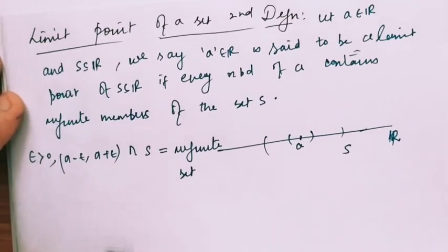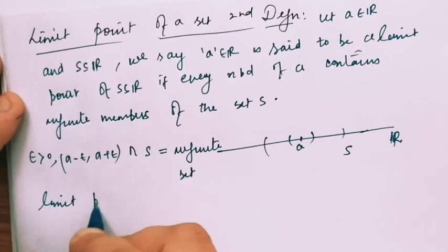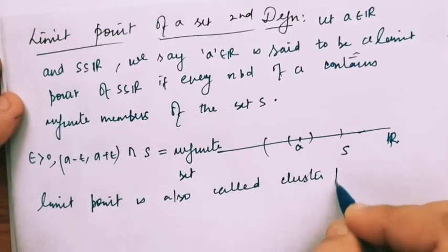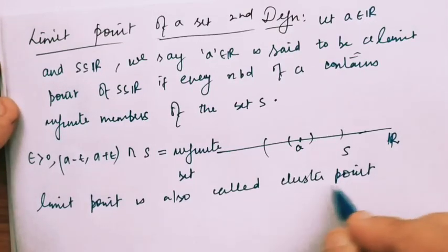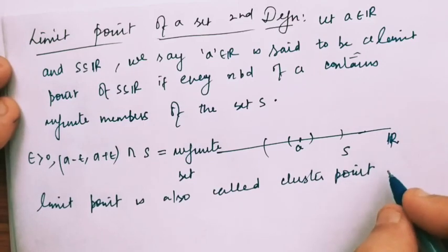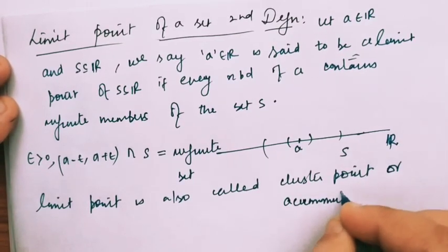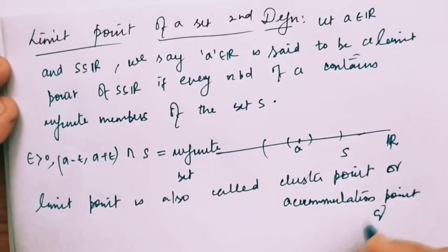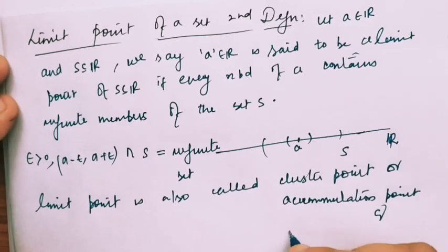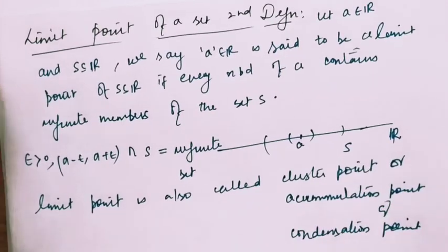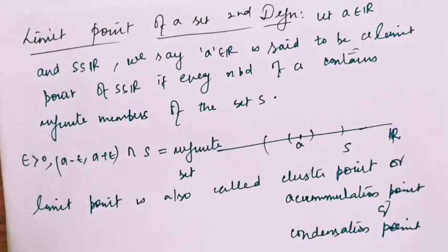So we have two synonyms for limit points. A limit point is also called a cluster point, an accumulation point, and one more term — condensation point. All three have the same meaning. You just have to recall what a limit point is and apply the definition to any question to get the answer. The definition must be understood very clearly so that you can use it in any example.